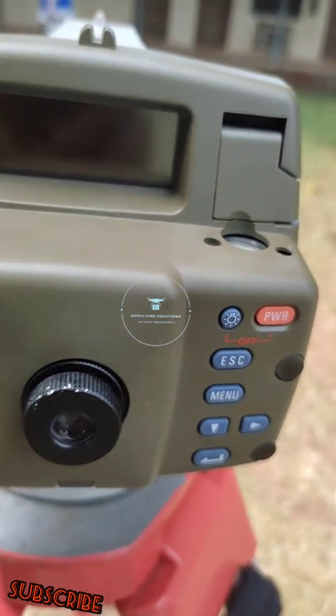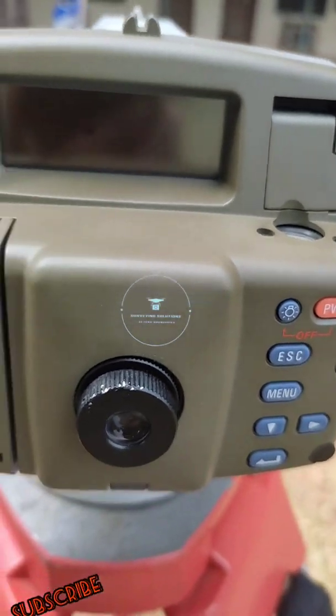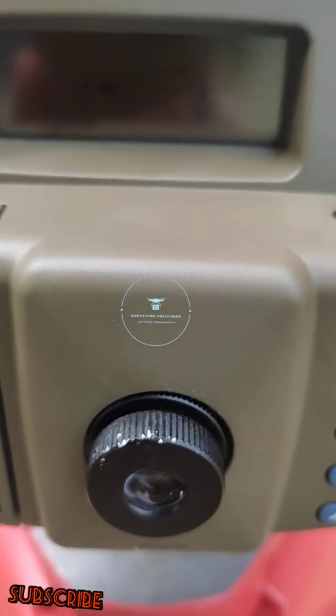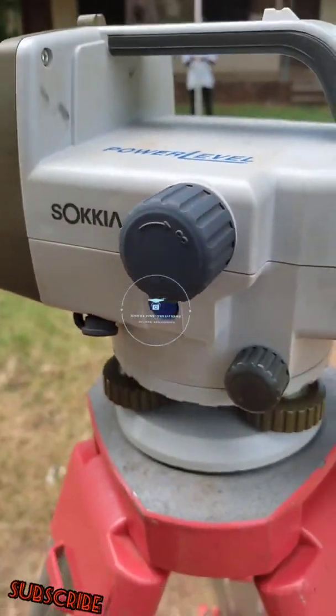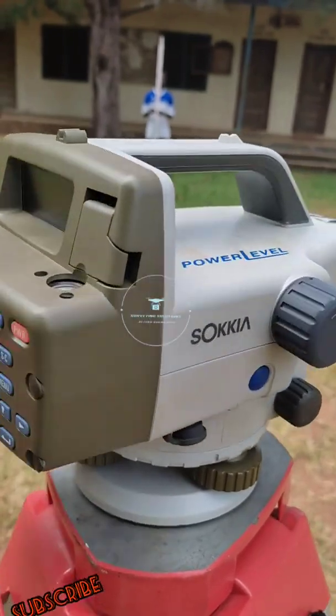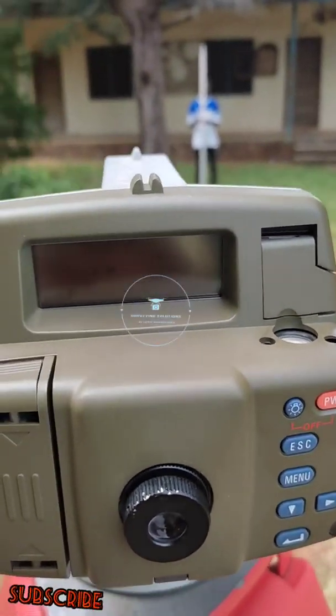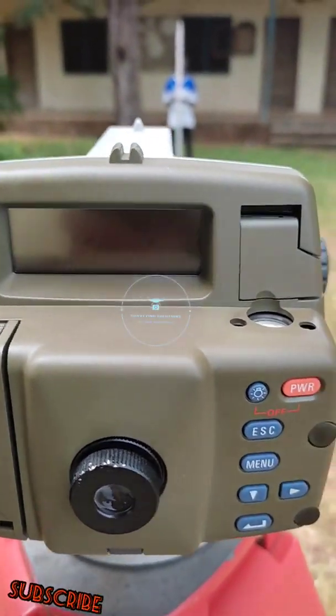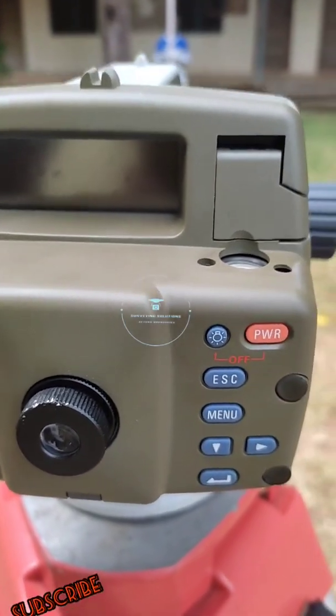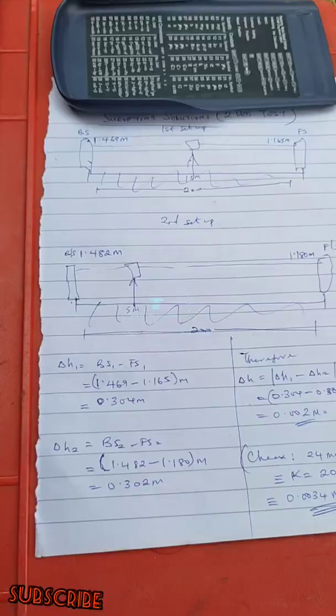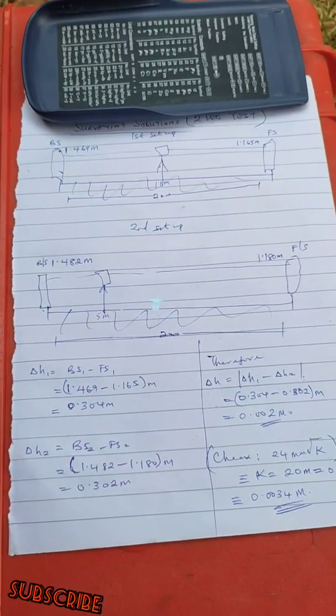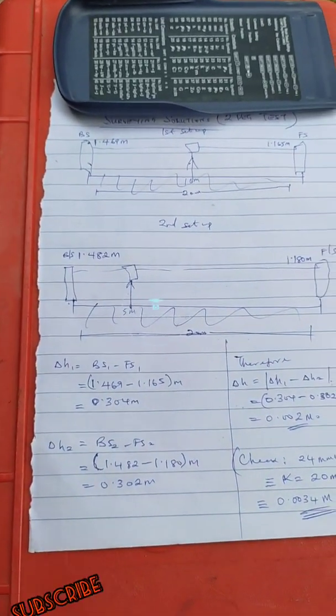Then you move the instrument, you set it up very close to one of the points, which is close to the zero mark, on the fifth meter. Then you make your deductions. So we are going to show you how to carry out the deductions very soon.